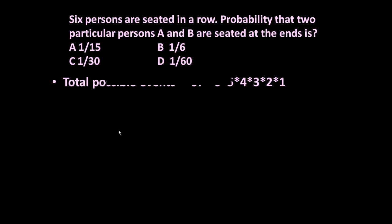There are 6 persons, so the total number of possible events — because 6 persons can be seated in factorial 6 ways. Factorial 6 means 6 × 5 × 4 × 3 × 2 × 1. This is the total number of possible ways in which 6 persons can be seated in a row.